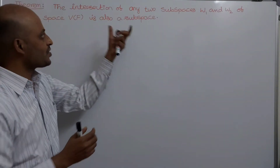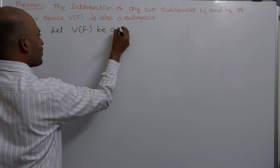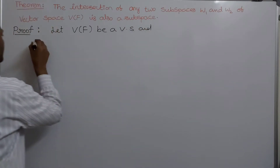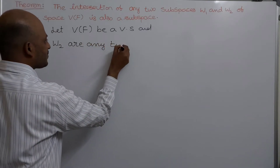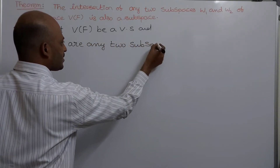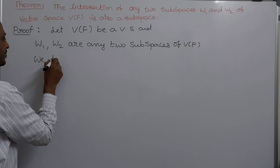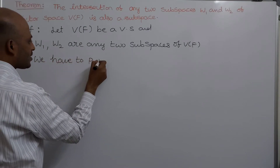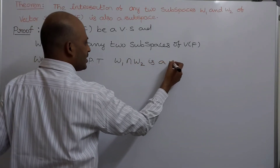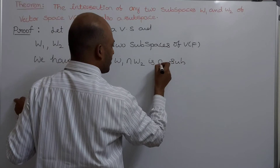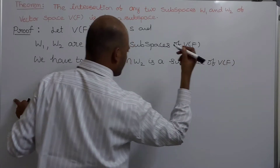So let us prove this statement. Let v of f be a vector space, and w1, w2 are any two subspaces of v of f. We have to prove that w1 intersection w2 is a subspace of v of f.